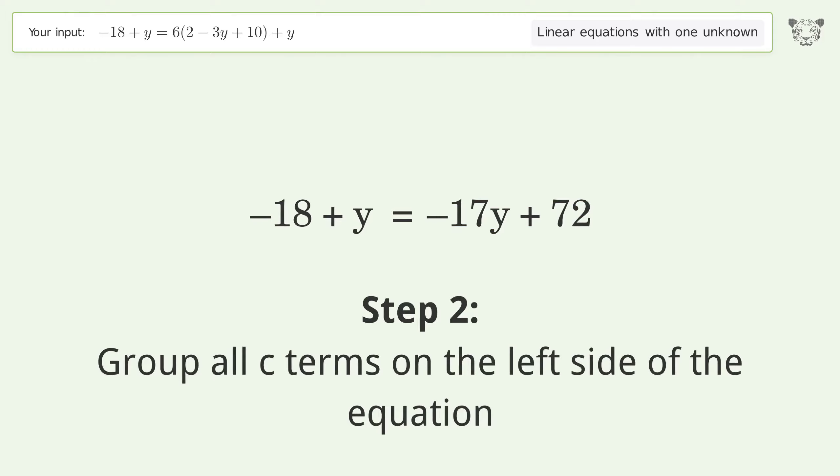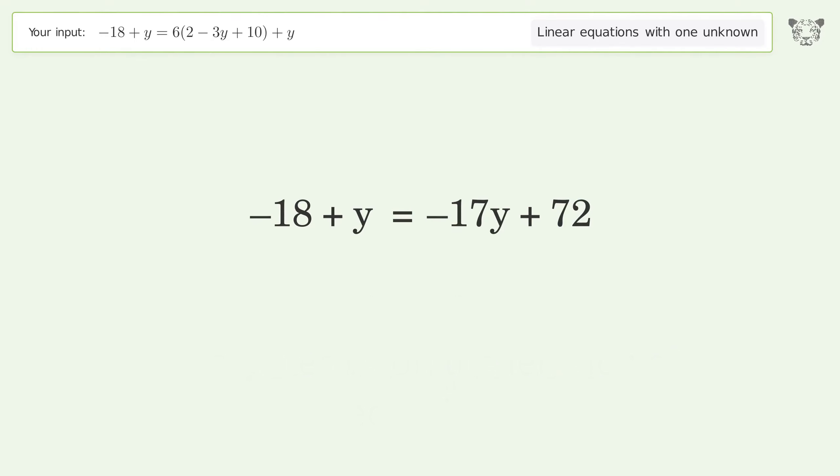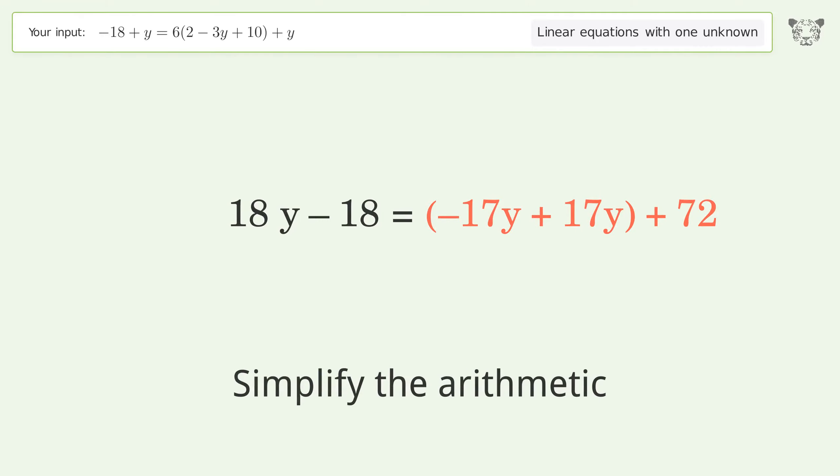Group all y terms on the left side of the equation. Add 17y to both sides. Group like terms, simplify the arithmetic. Group like terms, simplify the arithmetic.